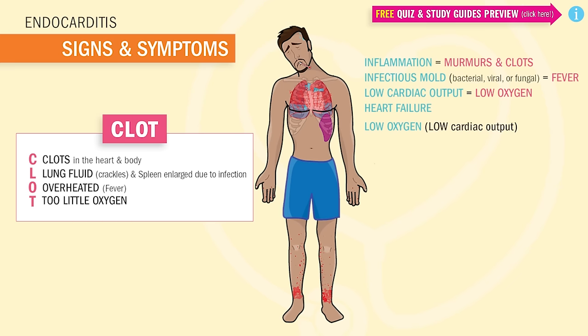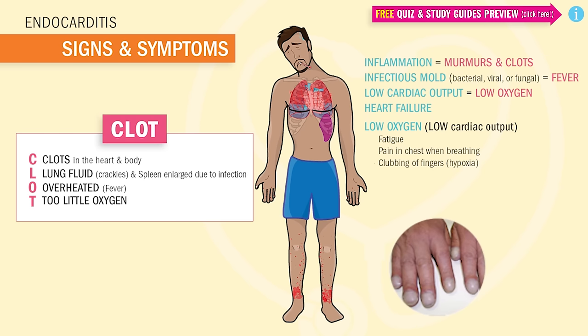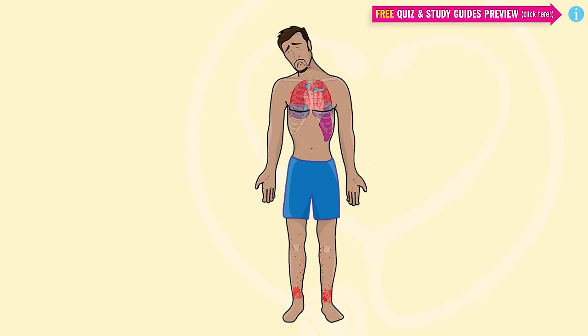Speaking of low oxygen to the body, we get a whole laundry list of complications. Like fatigue, pain in the chest when breathing, even clubbing of the fingers — which looks like rounded fingernail beds from long-term hypoxia. Also anorexia, weight loss, and even petechiae — those little red bumps that gather on the skin in response to low oxygen.